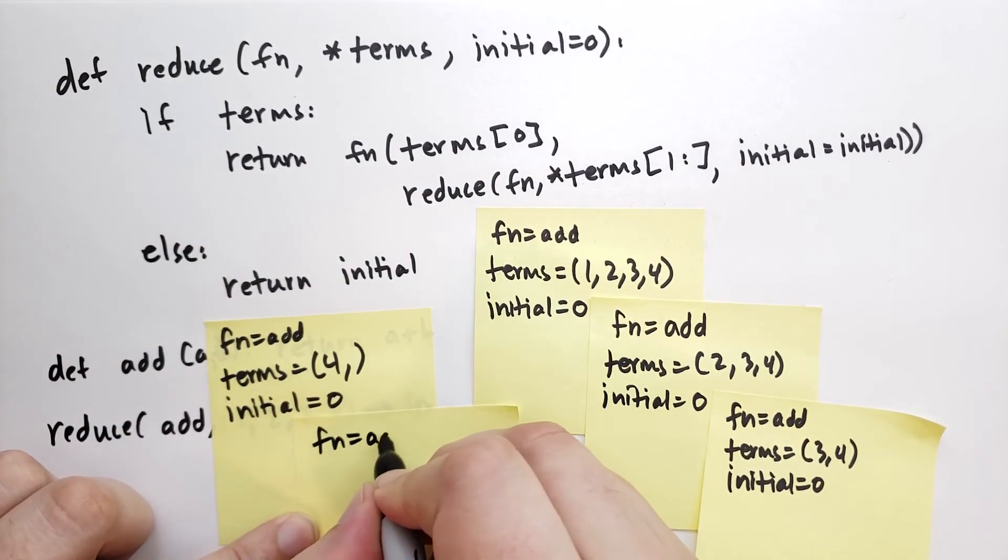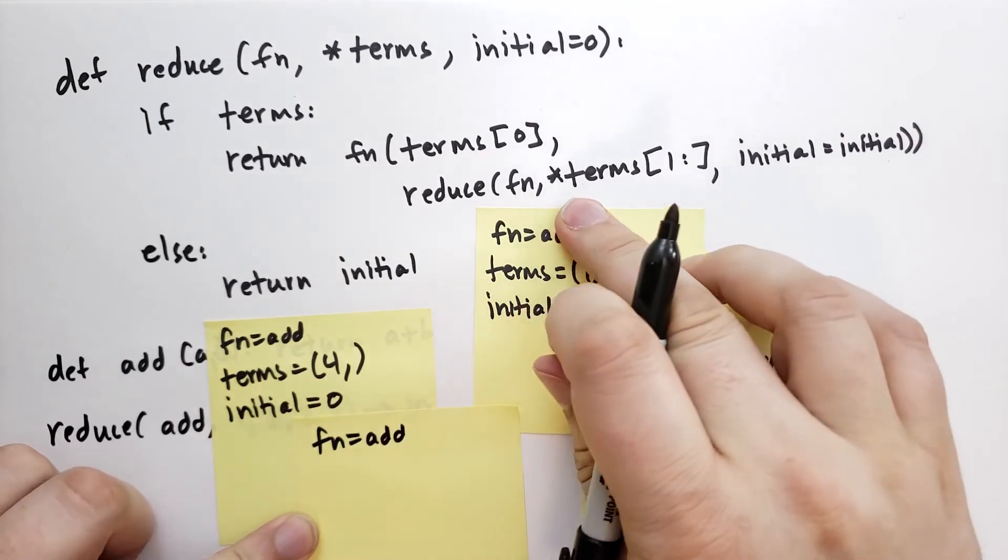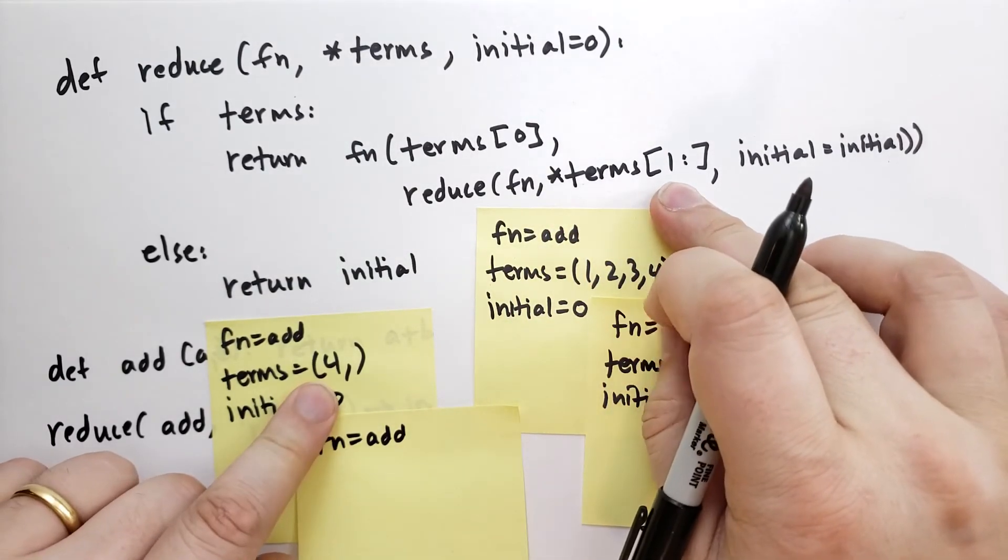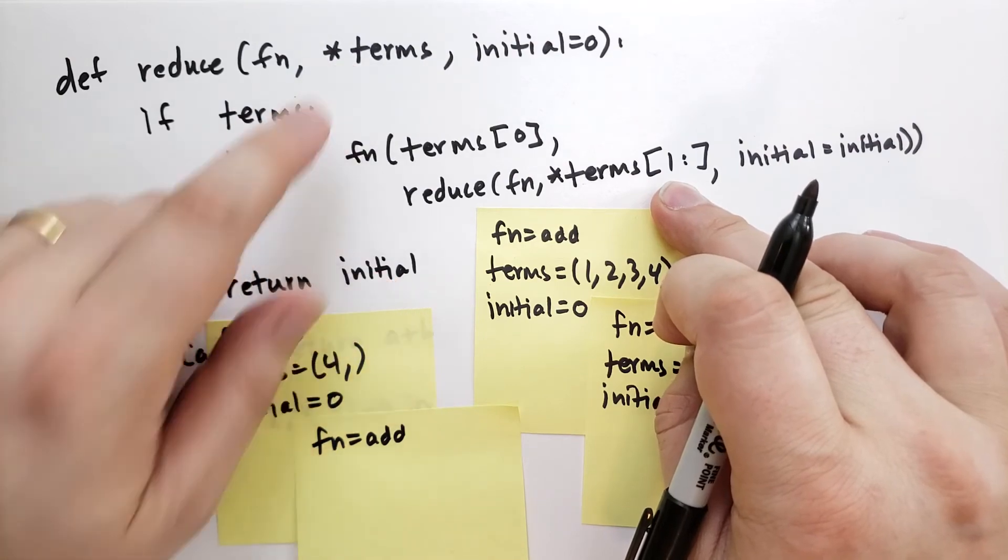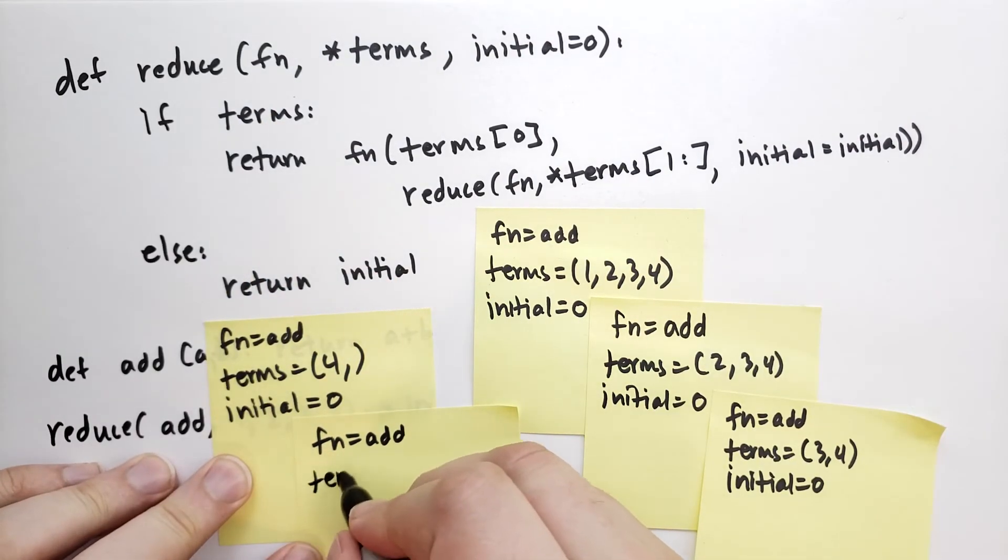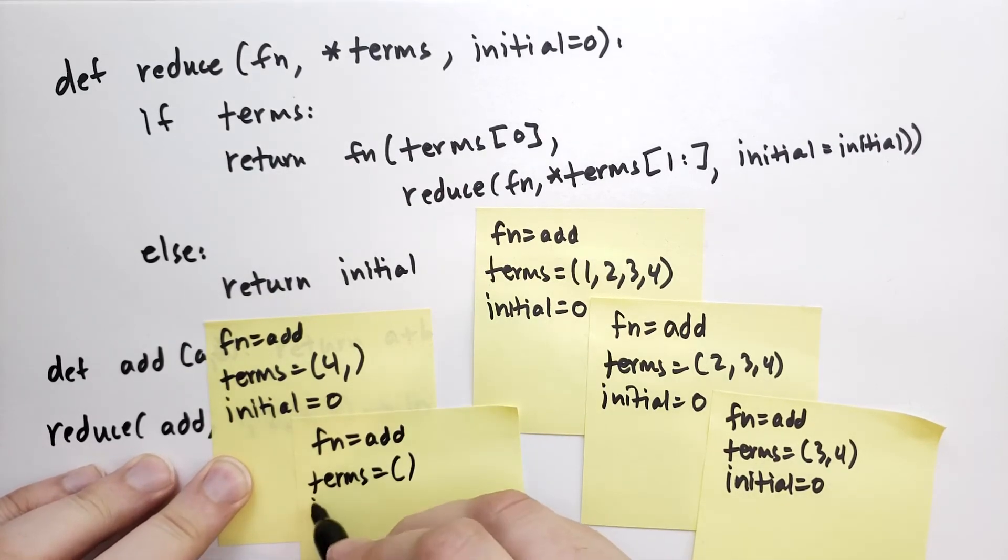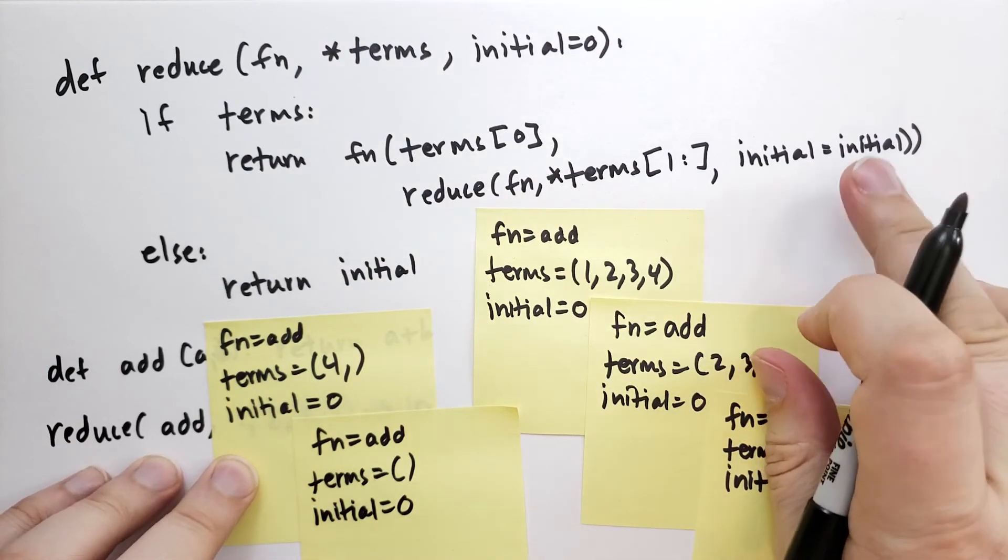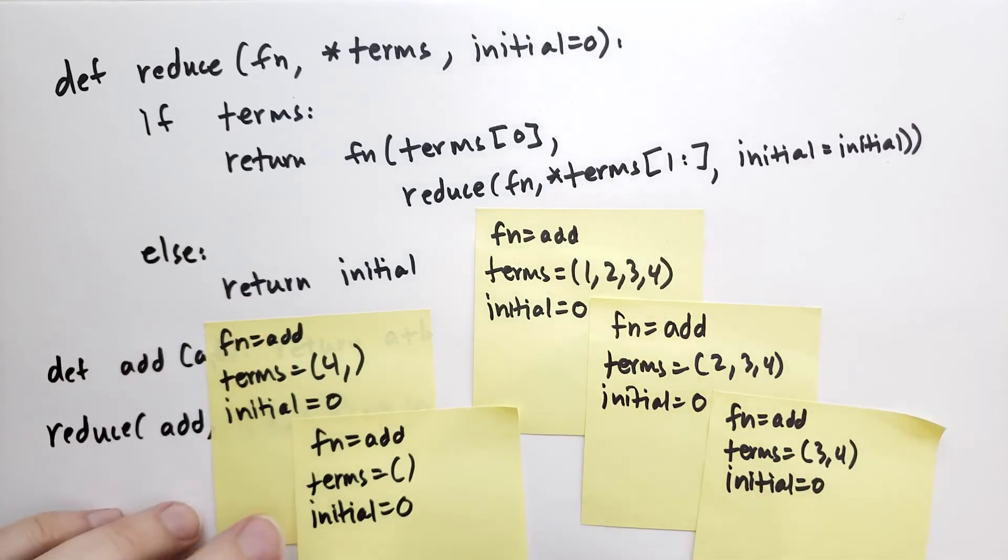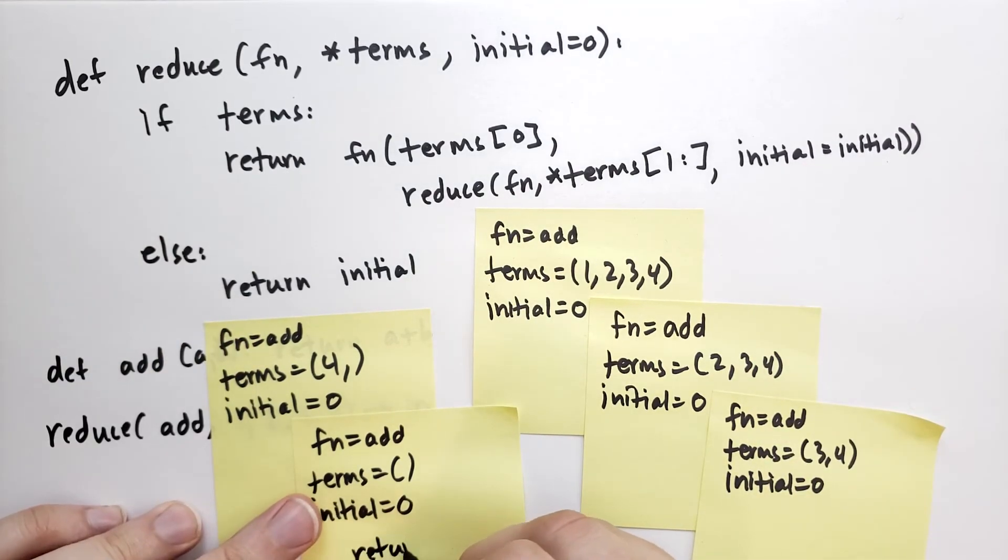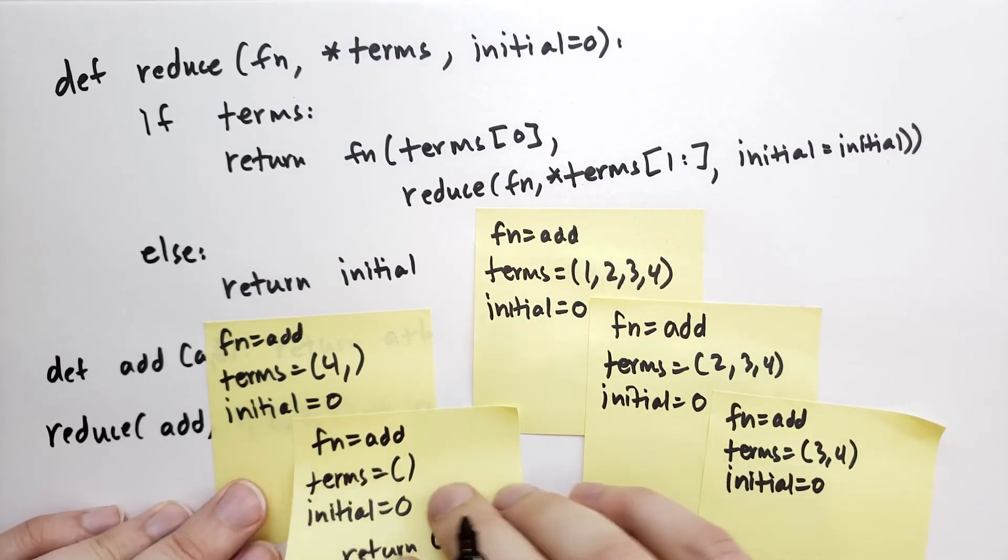This time the function is still add. And we're taking the term starting at the second element. There is no second element, so this is the empty tuple. So there are no additional terms. So terms is equal to the empty tuple, and initial is equal to 0. So when we call this last time, if terms, there are no terms. Else return initial. So this returns 0.